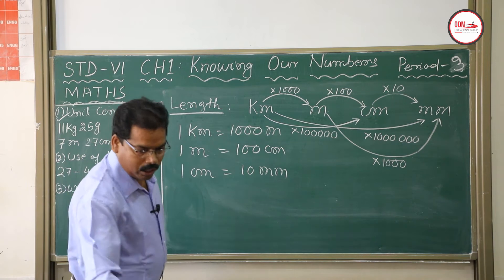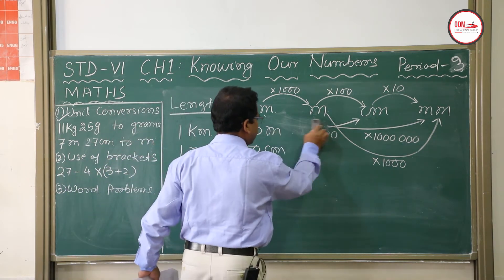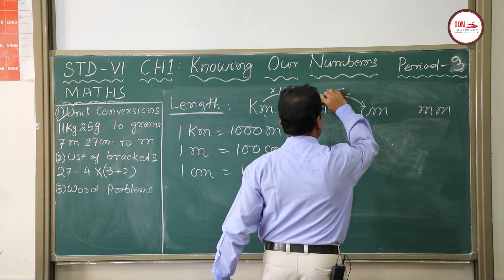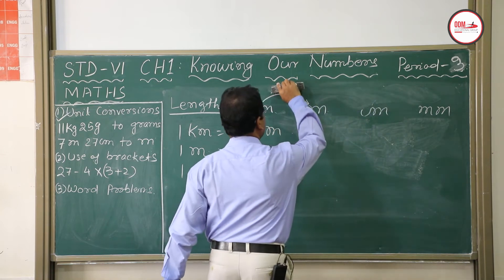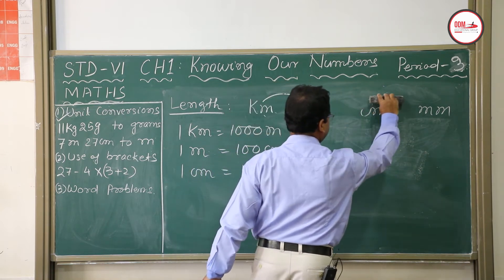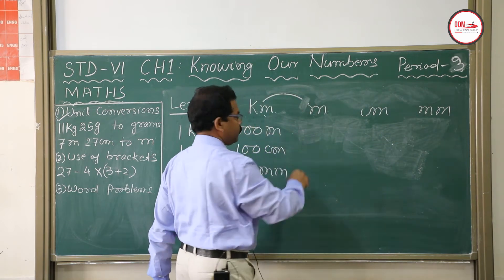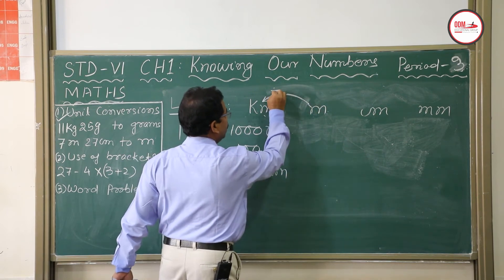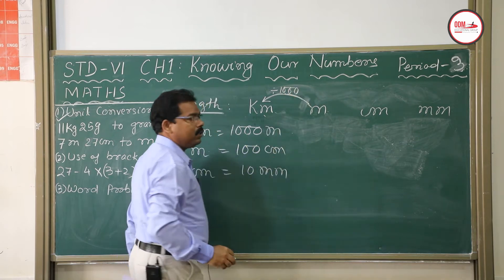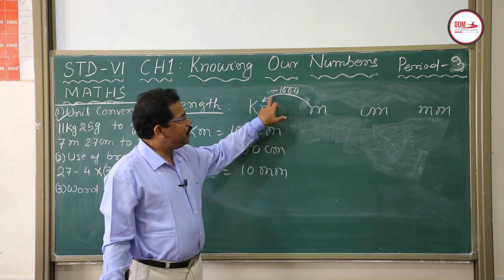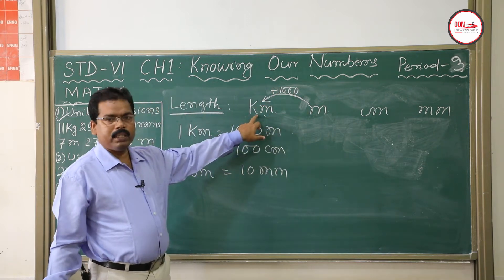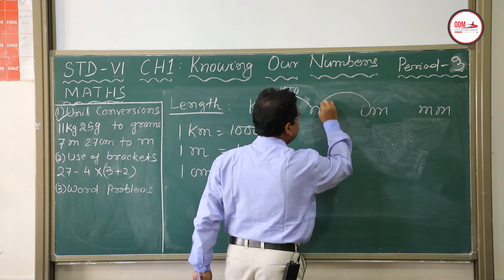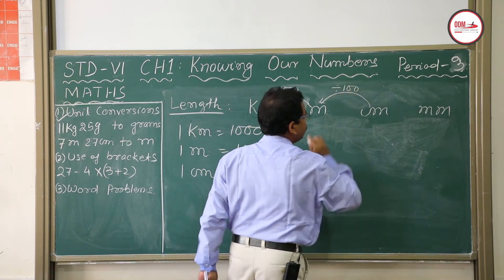Now we will convert smaller units to bigger units. If you want to convert meter to kilometer, divide by 1000, because kilometer to meter is multiply by 1000. So meter to kilometer is divide by 1000. Similarly, centimeter to meter is divide by 100.